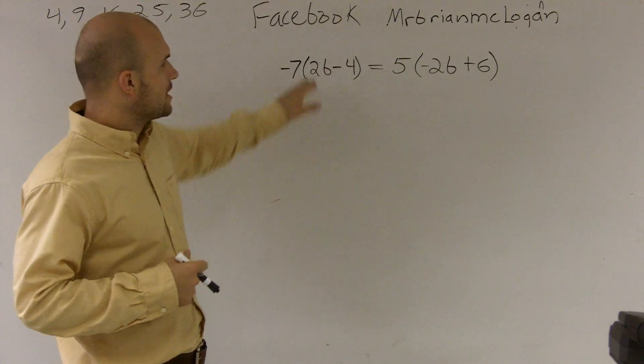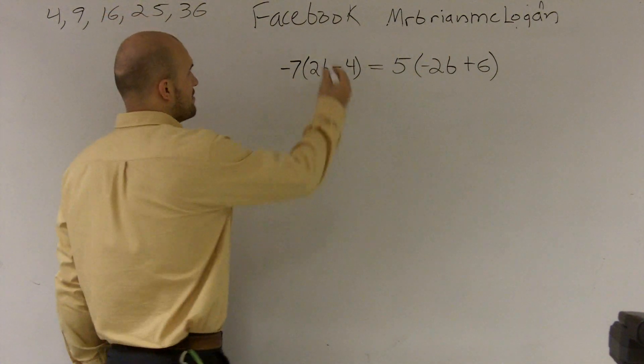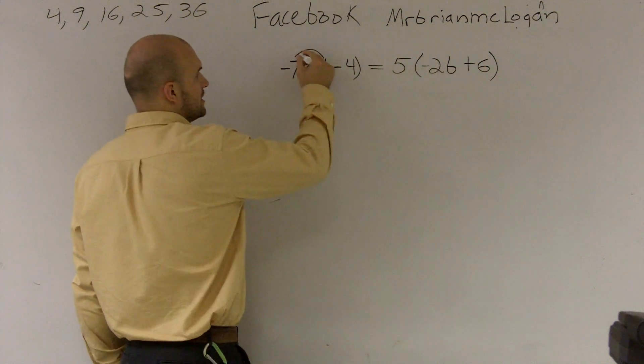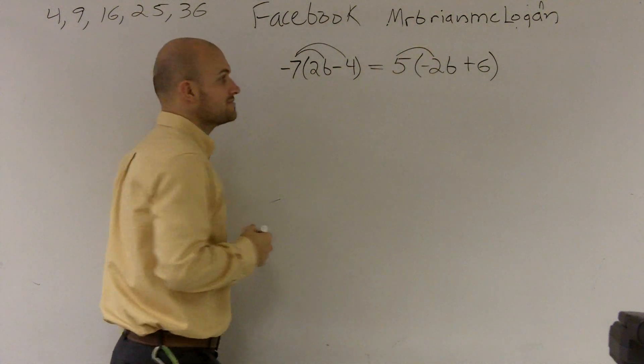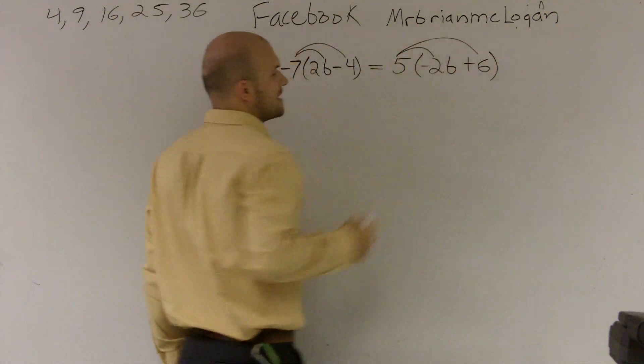When I look at this problem, what I notice is I can use distributive property by multiplying negative 7 times 2b and the negative 7 times negative 4. I can take this 5 multiplied by negative 2b and the 5 times the 6.